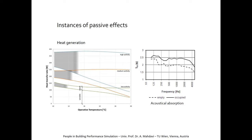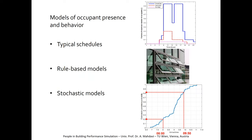Here I have simple examples from the literature of how passive effects are typically captured. The heat emission by occupants is captured in terms of people's activity and how many people are in the room, distinguishing between sensible and latent production of heat. Similar approaches are used to consider production of water vapor, carbon dioxide, and other pollutants.